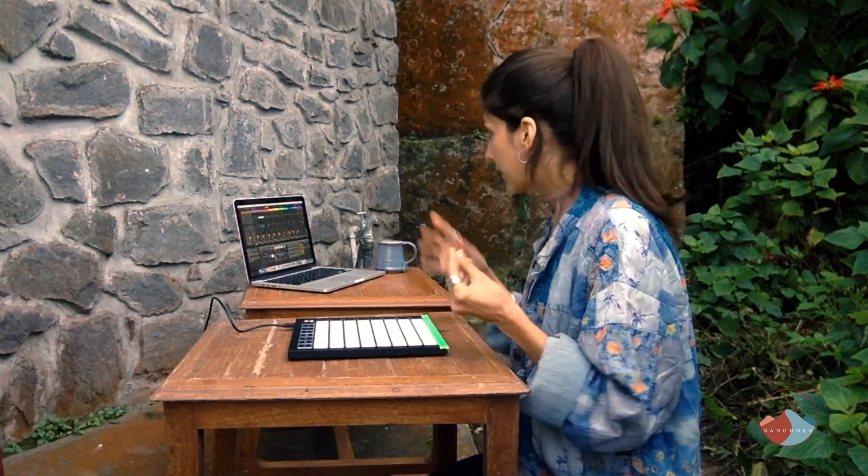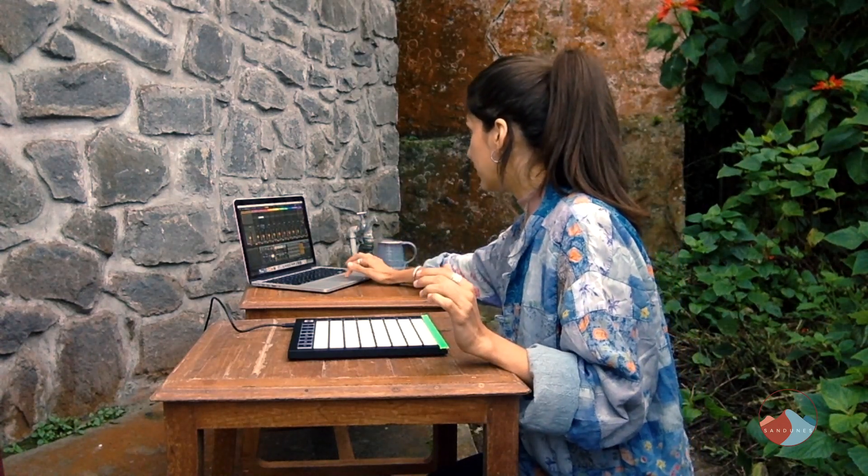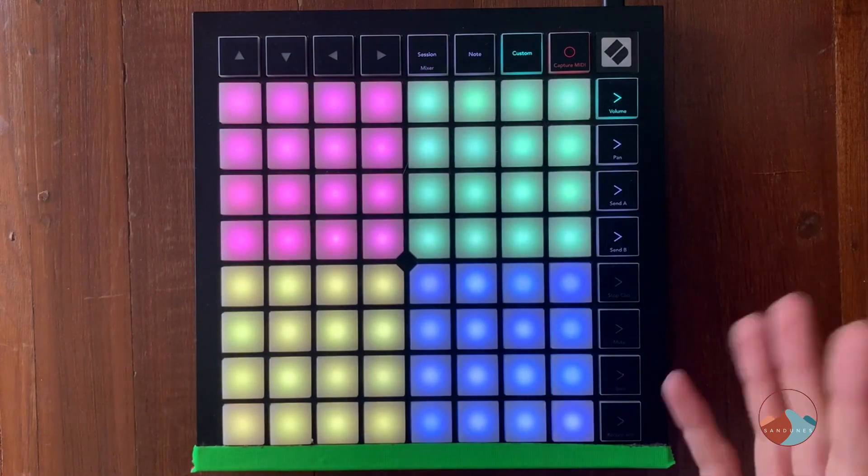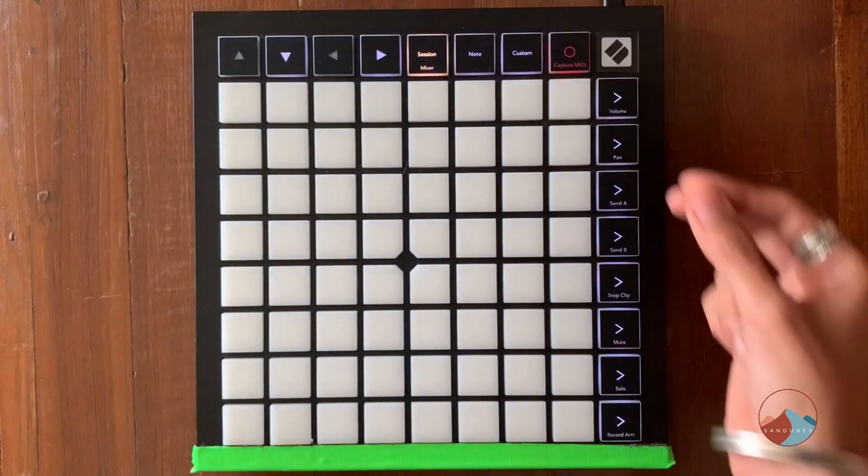So to begin with, I'm going to record some drums that I'm going to play live using a drum rack that I have loaded up in Ableton Live. To record a groove, first I have to record arm my drum rack track.